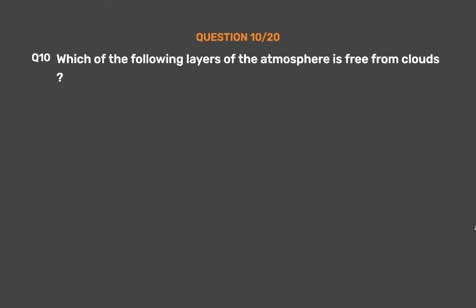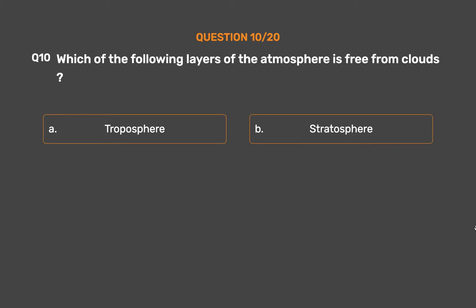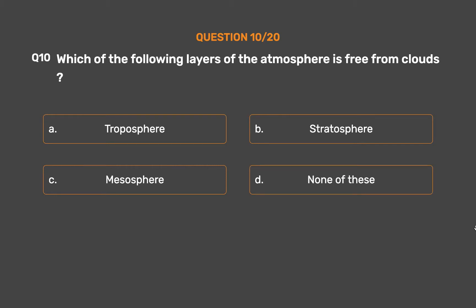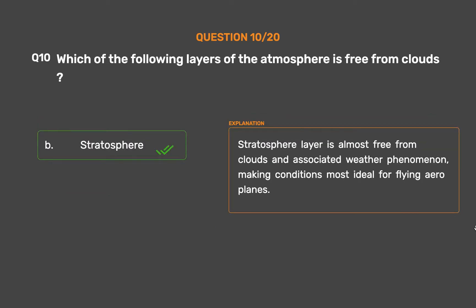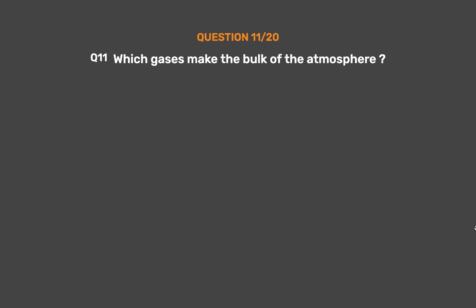Question number 10: Which of the following layers of the atmosphere is free from clouds? Option A: Troposphere. Option B: Stratosphere. Option C: Mesosphere. Option D: None of these. The correct answer is Option B, Stratosphere. Stratosphere is almost free from clouds and associated weather phenomena, making conditions most ideal for flying aeroplanes.